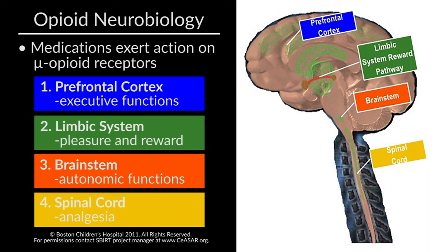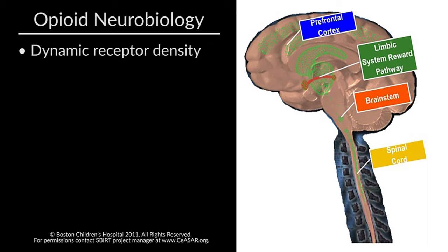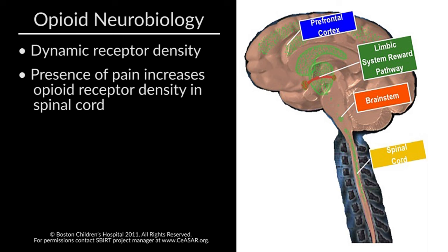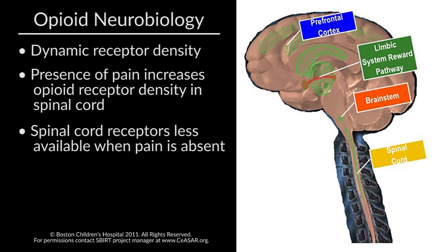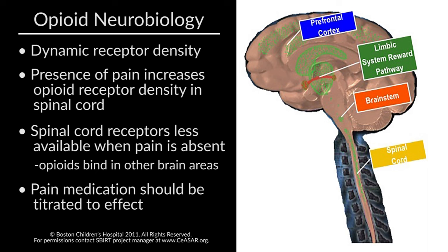Opioid binding has distinct physiologic functions in different regions, and the receptor density is very dynamic. An individual who has pain can tolerate a large dose of opioids, which will primarily bind in the spinal cord after an injury. However, the same individual may overdose on exactly the same dose of opioids when no longer in pain, as spinal cord receptors are less available and binding happens in other areas of the brain. Pain medication always needs to be titrated to effect — to reach pain control and kept at the lowest dose possible to minimize opioid-induced euphoria.